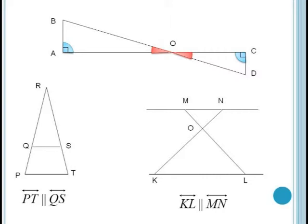In the second example, we're given segment PT is parallel to segment QS. Angle P is congruent to angle RQS, because they're corresponding angles. And angle PRT is equal to itself. Hence triangle PRT is similar to triangle QRS by our angle angle property.